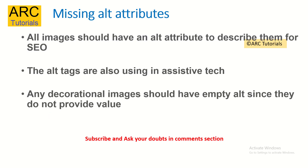The third one is the missing alt attributes. This is a common mistake that I see in the code, which really hurts the SEO, which is the search engine optimization. All images should have an alt attribute to describe them. That gives a meaning for image indexing and it also gives the context to the search engines about what the image is about. So make sure that whenever you are adding any image tag in your code, you also provide the alt attributes.